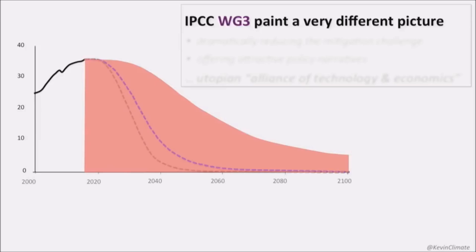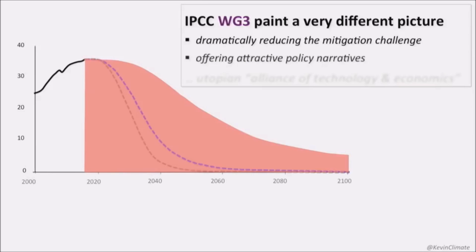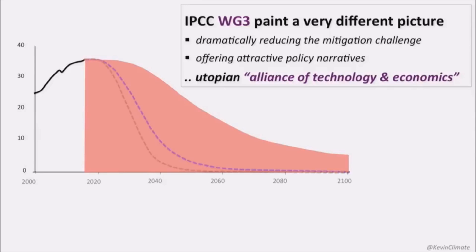In my view, Working Group 3 shouldn't be part of the IPCC. But these are the median values from Working Group 3, which is dominated by economists with some engineers. They look at a much more attractive curve that dramatically reduces the mitigation challenge. As a policymaker or as a citizen, we might think that's much more attractive. It offers nice narratives about how we can make incremental nudge-type changes to solve problems of climate change. But it's built on a complete utopian alliance of technology and economics, and no one I know who works in these models thinks they're viable. They're politically suitable for now, but they won't work.